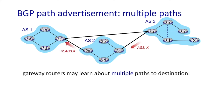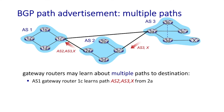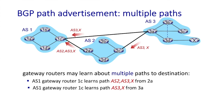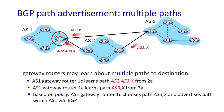It's possible for a BGP router to learn about multiple different paths to the same destination. In this example, AS1 gateway router 1c has learned about a lower path to X via AS2 and AS3. Router 1c also learns about another path AS3,X — this upper path — directly from router 3a. Based on policy, router 1c chooses the path AS3,X and advertises this path within AS1 via IBGP.